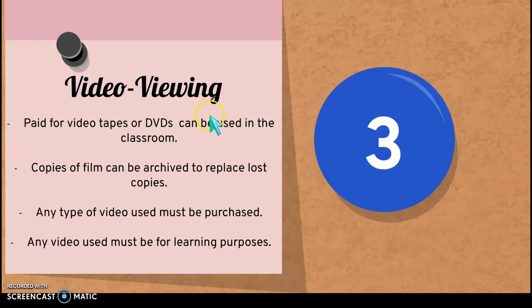Videos are another category. If you are viewing or watching a video, especially if you're working at school or for a project, you have to pay for the video in order for it to be used in your classroom. Videos can refer to a DVD, or in y'all's case, it's probably going to refer to clips you find somewhere such as YouTube. Copies of a film can be archived to replace lost copies — if you lose the copy and it was purchased by the school, you are able to save a copy to replace the one that's lost. Any video used for instructional purposes or in a school has to be purchased, and any video you use for your projects has to serve an educational purpose.